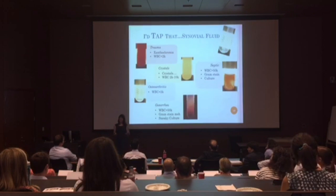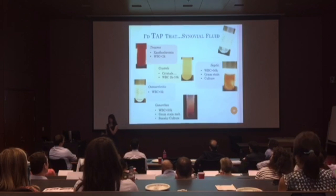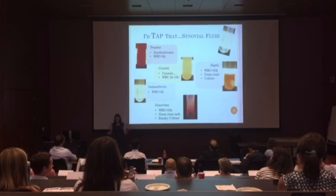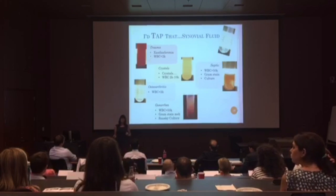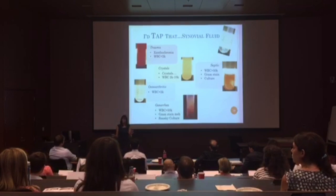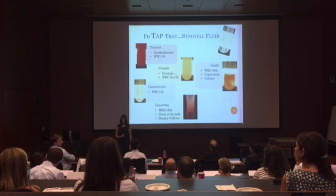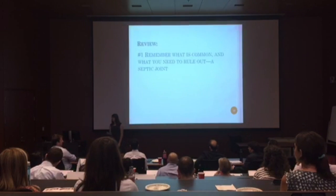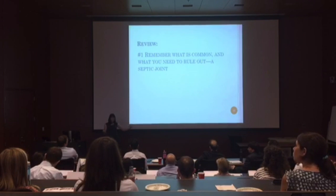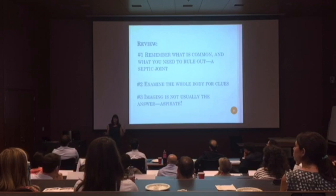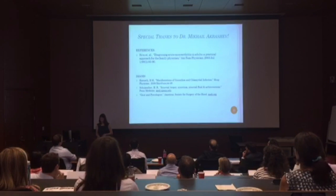For a non-gonococcal septic joint, it's going to look really turbid, viscous, and purulent — tens of thousands of white blood cells. If you culture it and gram stain it, you are likely to get results, but don't wait for those results to start the patient on antibiotics. When you see something like this coming out of the knee, you need to act fast. So let's review: remember what's common and what you need to rule out, examine the whole body for clues, and imaging is not usually the answer — you need to aspirate the joint. Thank you, and if you want to read more, check out American Family Physician.